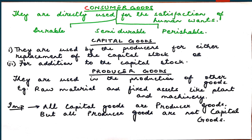Coming over to capital goods: capital goods are those final goods referring to fixed assets such as plants and machinery, which help in the production of goods and services. They add to the stock of capital goods — that is, they help in capital formation.